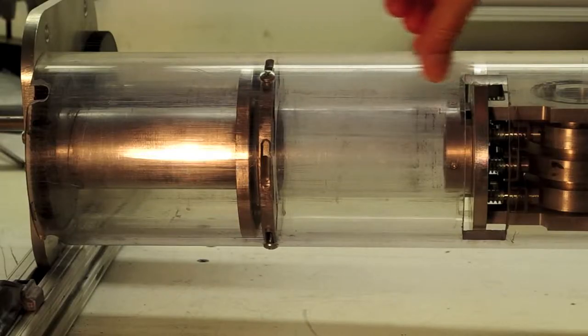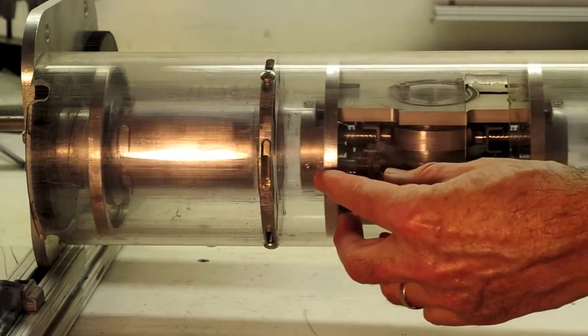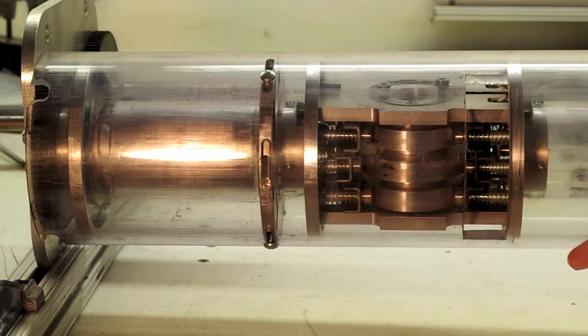The combustion chamber starts to move and it closes the slots. The trapped air is compressed, fuel is added, and we get the power stroke.